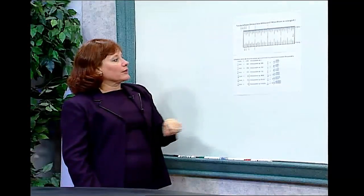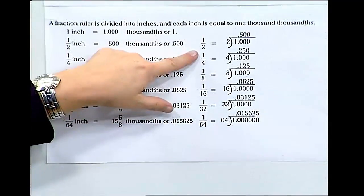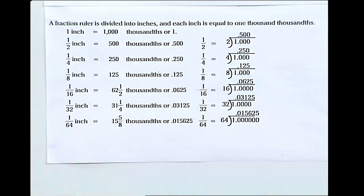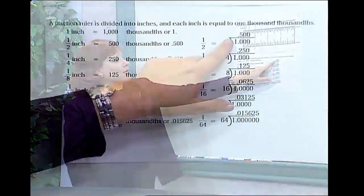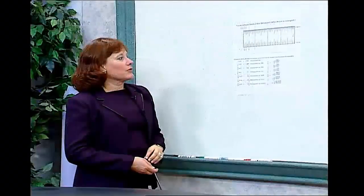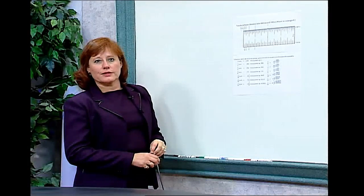One way to get that number is to take the number one half and actually do the division of two into one. When we take two into one, we get .500, the number that stands for five hundred thousandths.